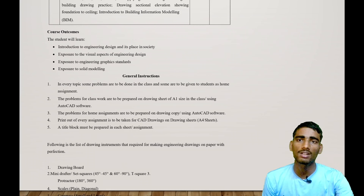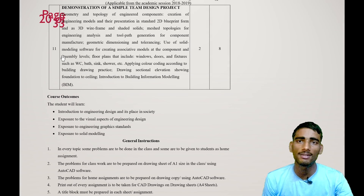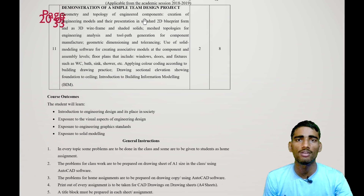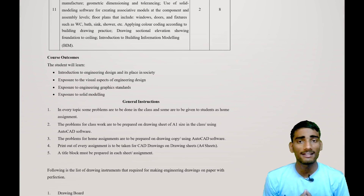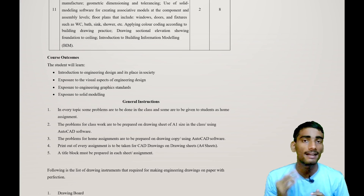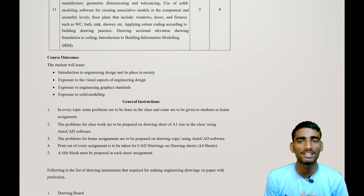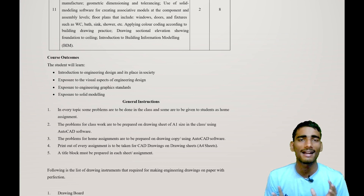The tenth topic also covers geometry and topology of engineering components, 2D and 3D wire frame models. The course outcomes are: you will be able to understand engineering design and its place in society, gain exposure to visual aspects of engineering design, exposure to engineering graphics standards, and a brief introduction to solid modeling.